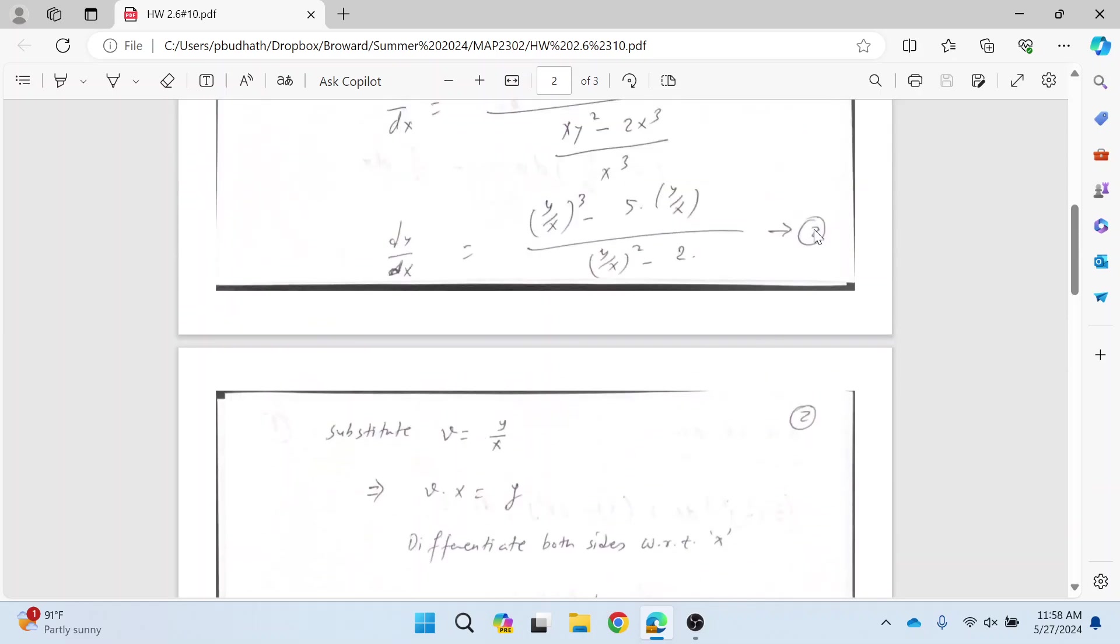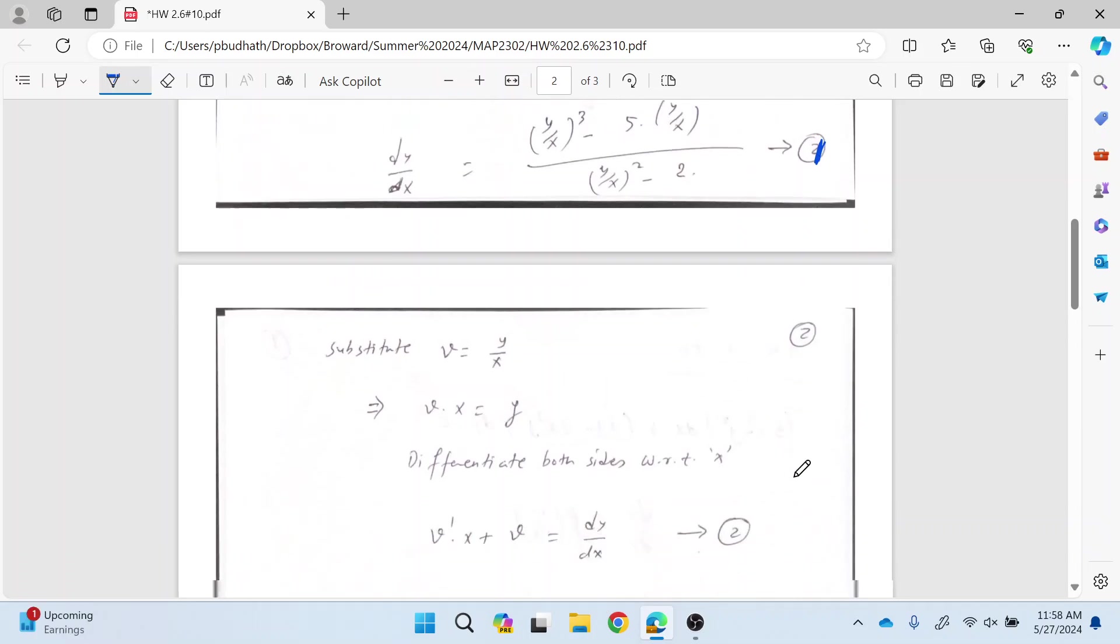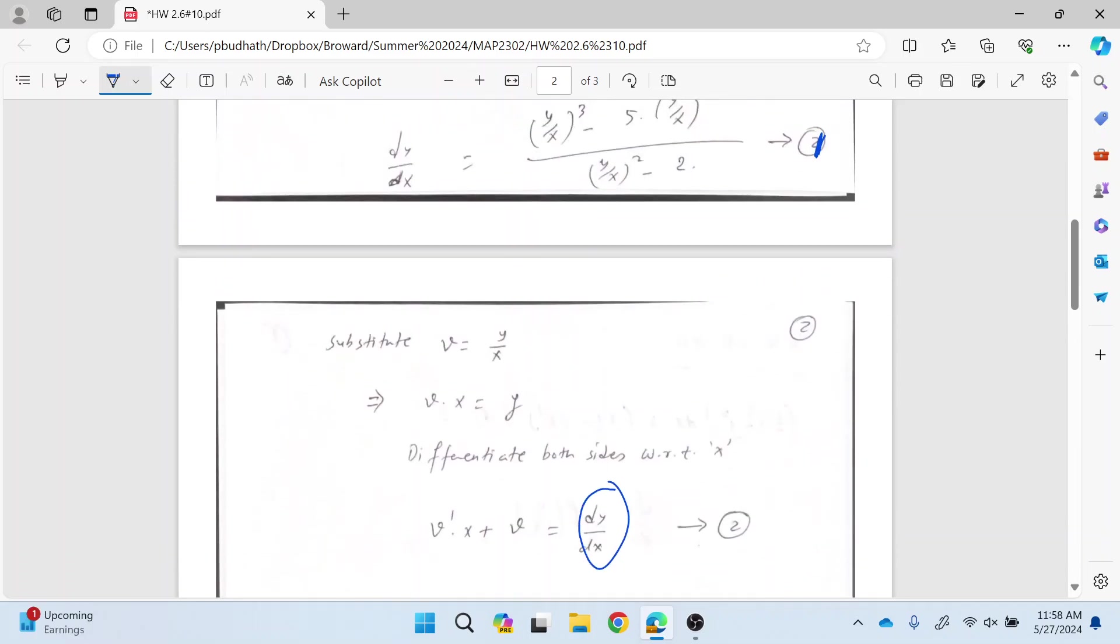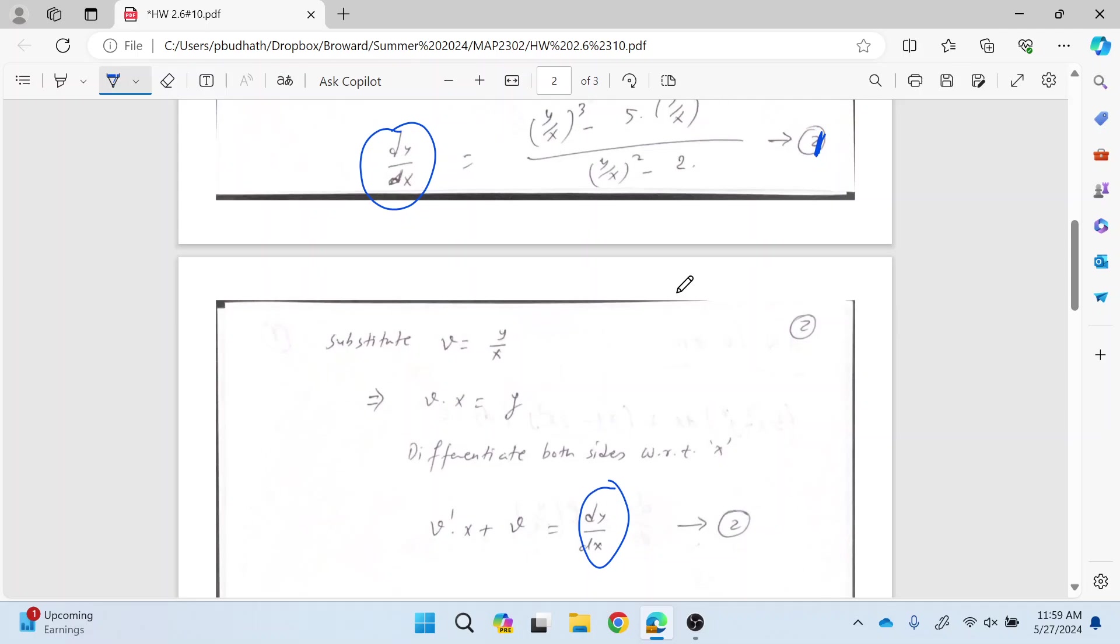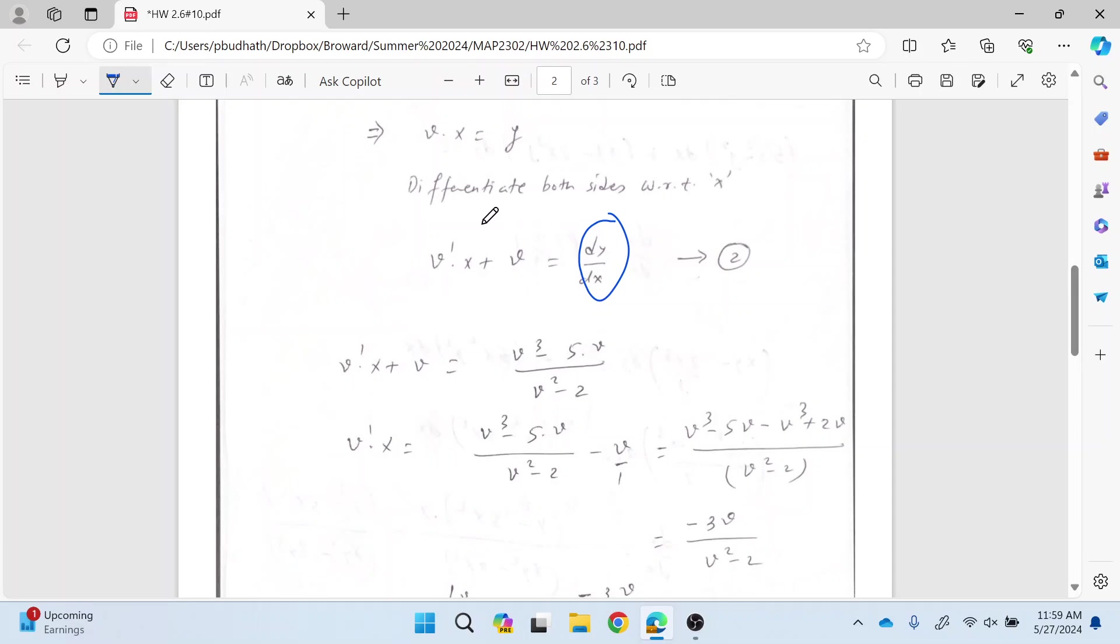As you can see here, this equation, which is supposed to be equation one, equation one and equation two, both of them have values for dy over dx, so I can just equate this expression with this one. Keep in mind we are putting v for y over x here. By doing that, I get this thing from the left side of equation two and this thing after substituting v for y over x from equation one.